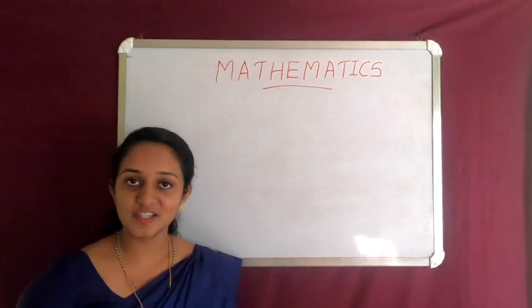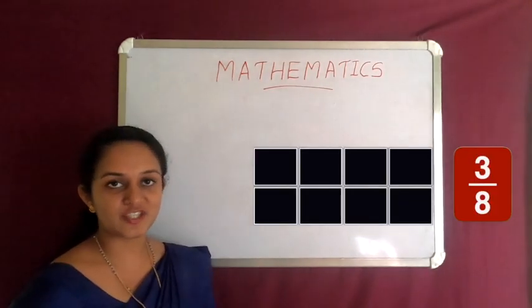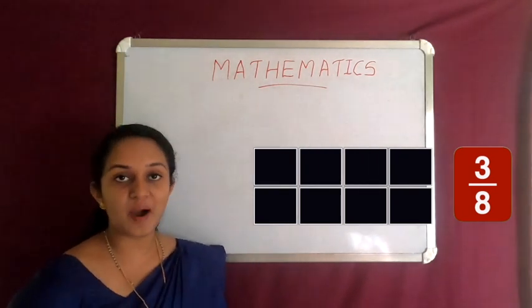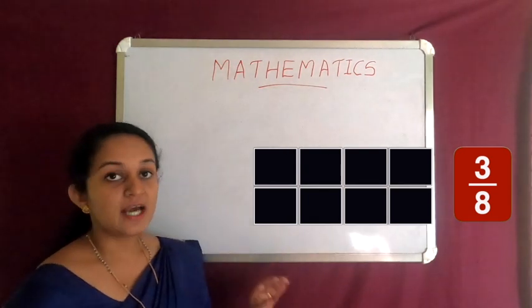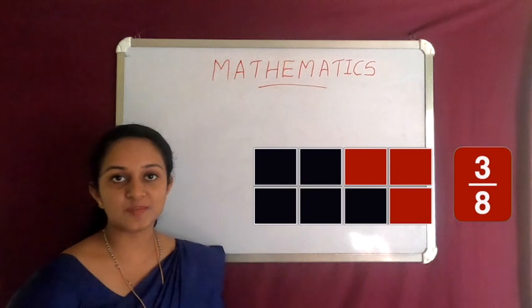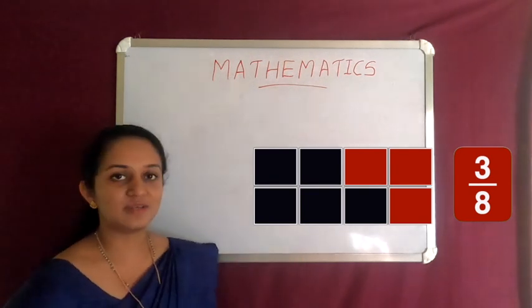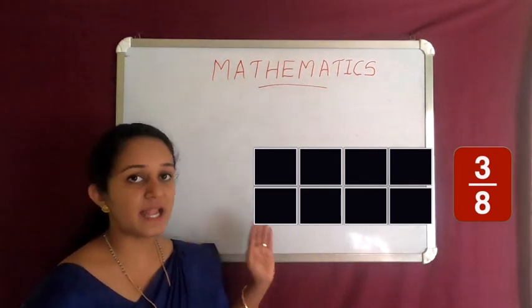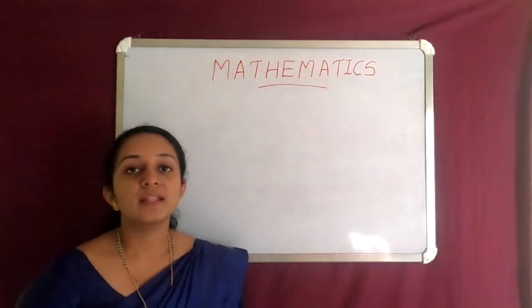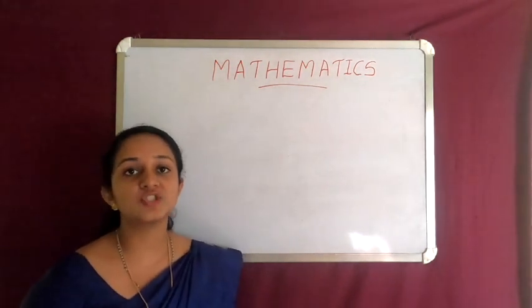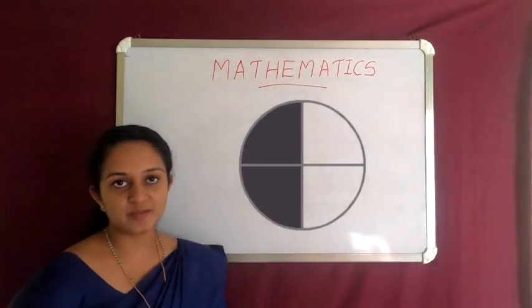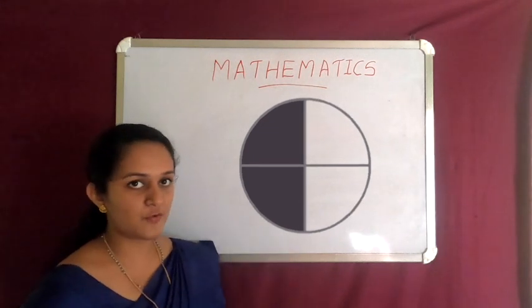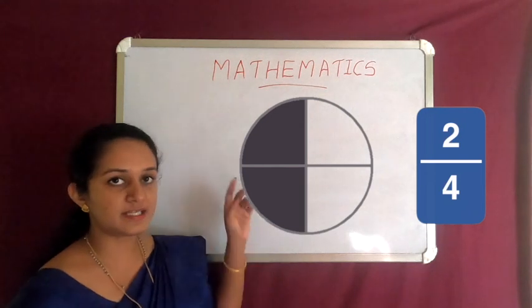Did you get all three correct? Now let's shade this figure according to the given fraction. This rectangle box has eight equal parts and the fraction is three by eight, so we have to shade three parts in this rectangle box. In the next question, the fraction should be found from the shaded area. In this circle, two portions are shaded and there are four equal parts, so the fraction is two by four — two is the numerator because two parts are shaded.